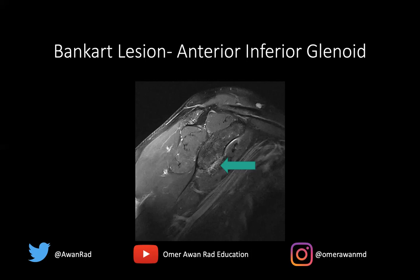I hope that was helpful in demystifying the MRI appearance of an anterior glenohumeral joint dislocation. Tune in next week for another super high-yield MSK unknown case. Thank you so much for your attention.